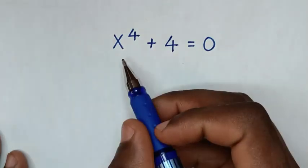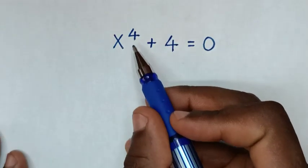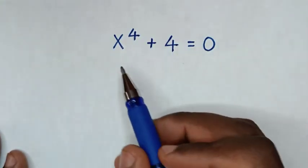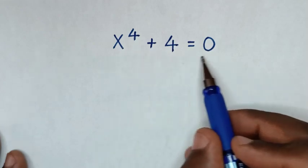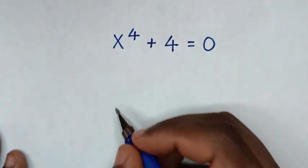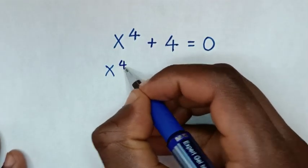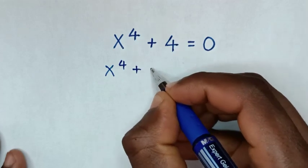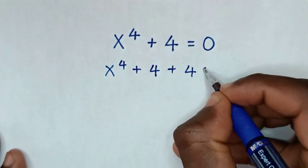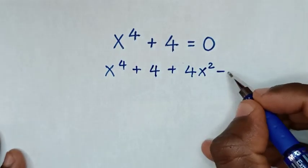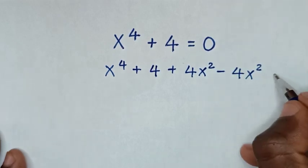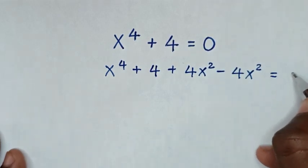Hello. How to solve x to the power 4 plus 4 is equal to 0, to find the values of x from this equation. So in the first step, it will be x power 4 plus 4, then we add 4x squared, then minus 4x squared, is equal to 0.